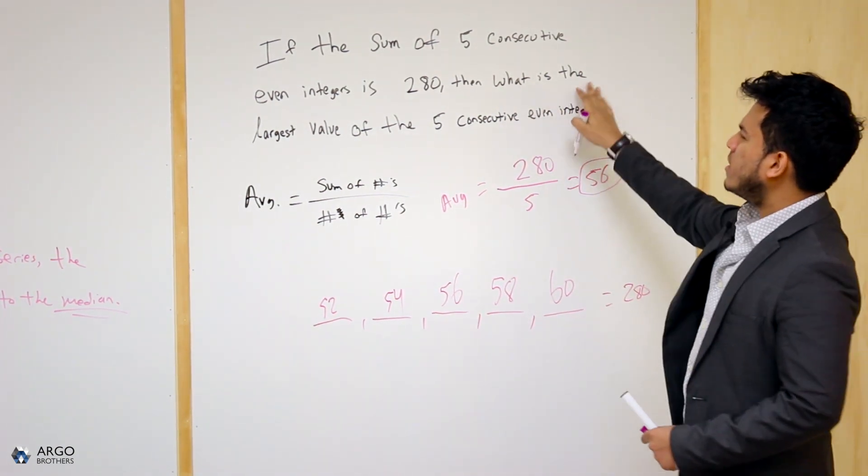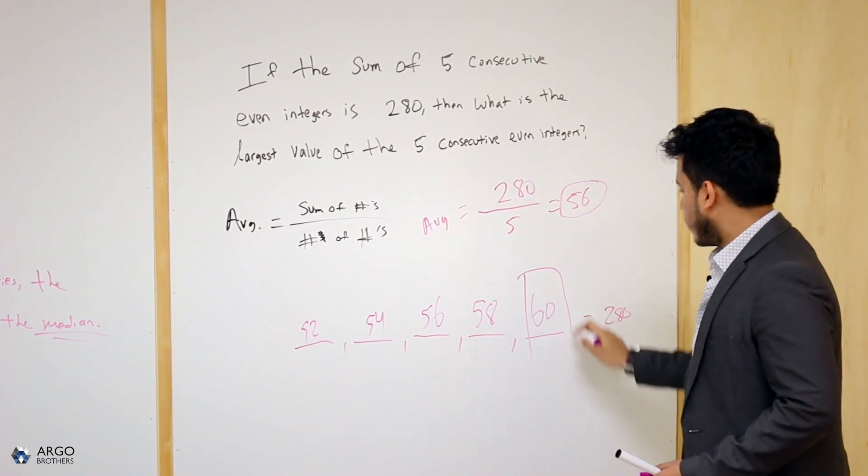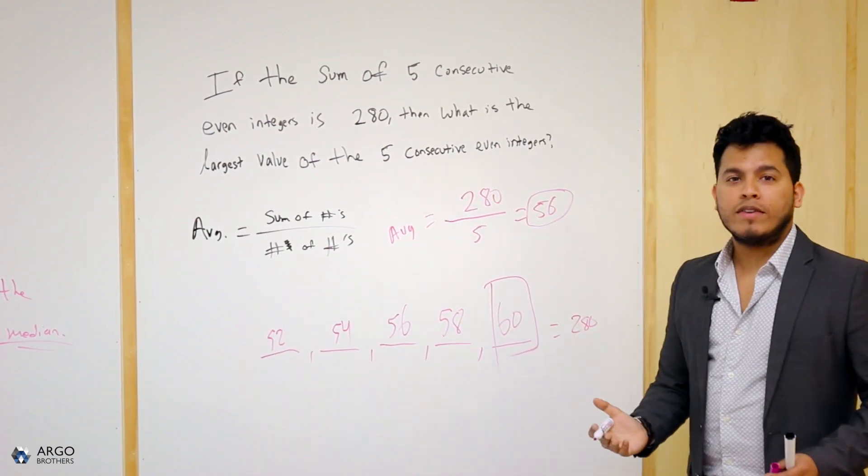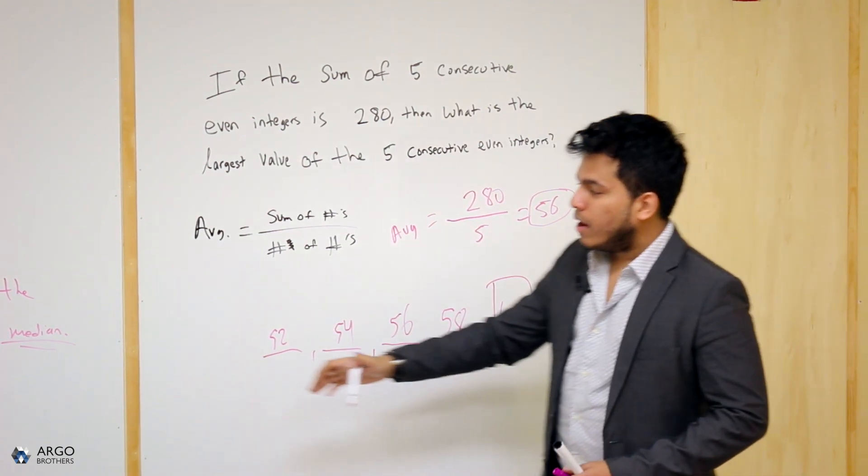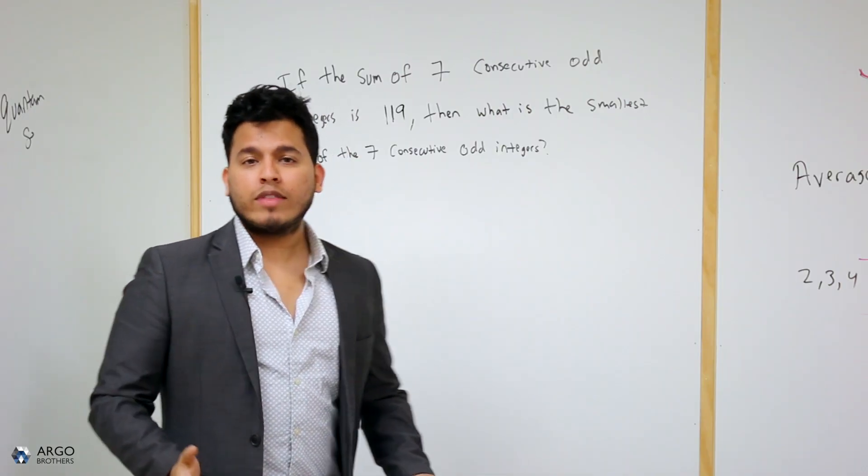What is the question asking you? What is the largest value of the five consecutive even integers? Well, for sure, 60 is the largest value of the five consecutive even integers. And there you go. There you have it. It's very simple. I would advise you highly to use this rule because it will save you a lot of time. Let's go ahead and take a look at this question over here.